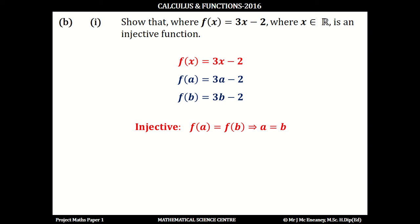So if we equate f of a and f of b, you get 3a minus 2 equals 3b minus 2. The minus 2s cancel on both sides, and 3a equals 3b, and the 3s cancel, and then you do get a equals b. So because we've got a equals b, that does prove that the function f is injective.